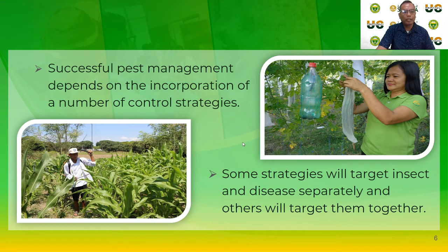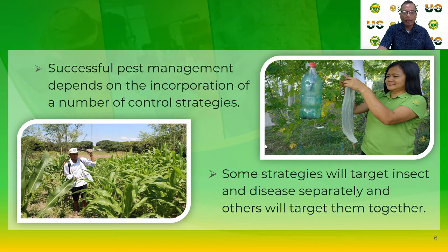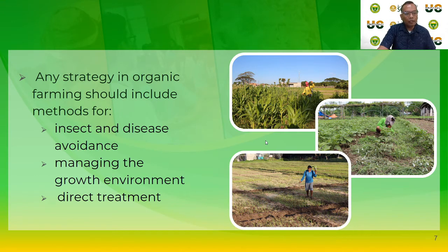Successful pest management depends on incorporating a number of control strategies. Some strategies will target insects and diseases separately and others will target them together. Pests in a crop do not automatically result in damage or yield loss — once infestation levels reach a certain point, then they can produce economic losses. Any strategy in organic farming should include insect and disease avoidance, managing the growth environment, and direct treatment.